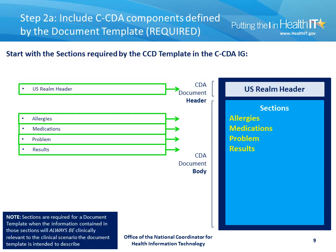In step two, we start with the sections required by the CCD template in the Consolidated CDA Implementation Guide. In this case, we will start with the U.S. Realm header, the Allergy section, the Medication section, the Problem section, and the Results section. The sections that are required for the document template are required when the information contained in those sections will always be clinically relevant to the clinical scenario the document template is intended to describe.